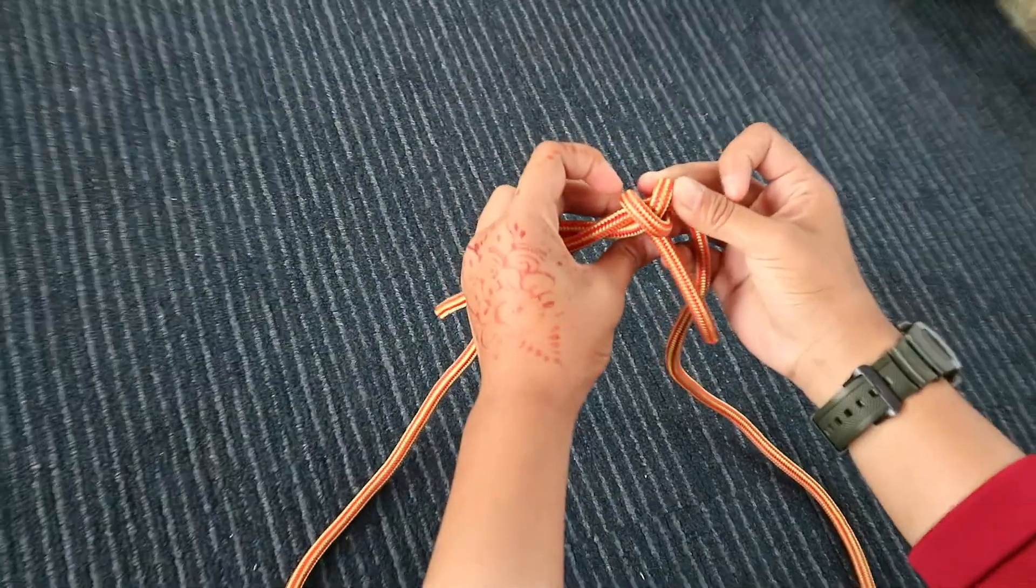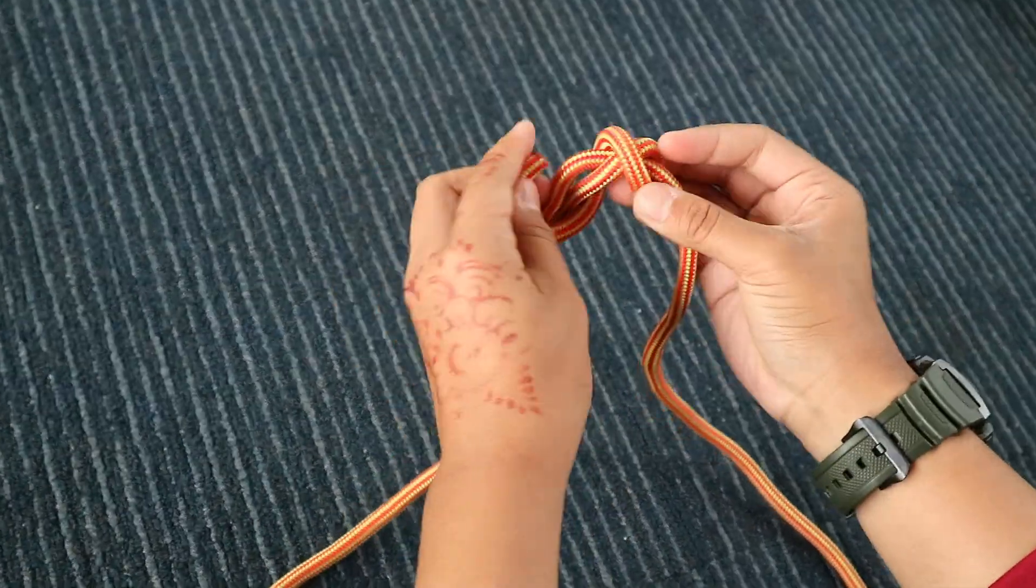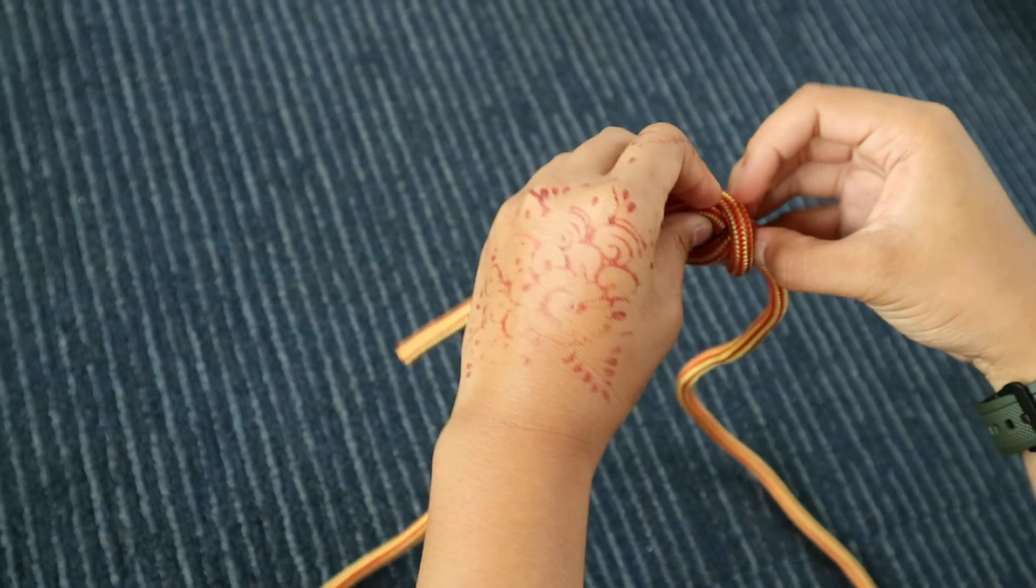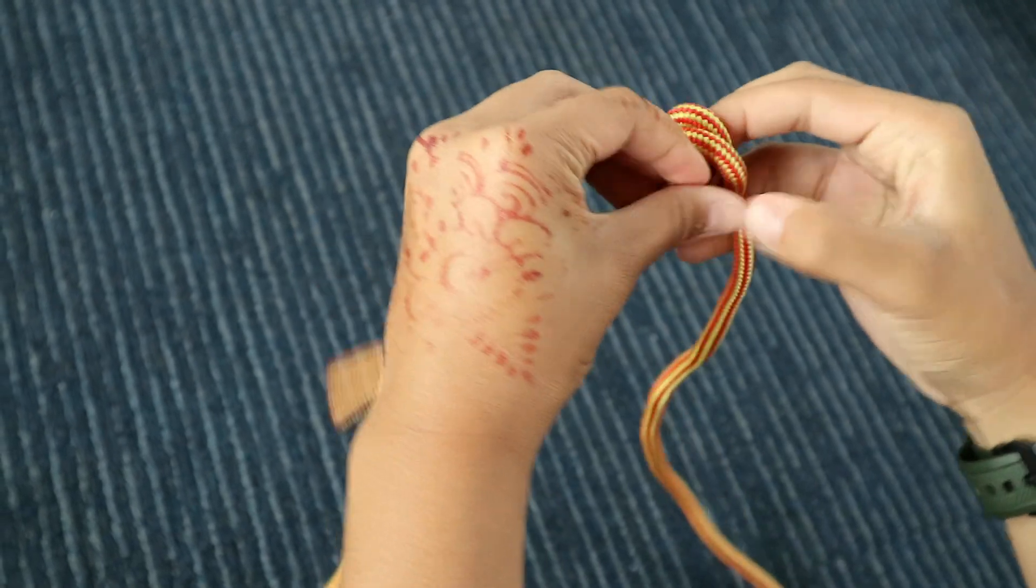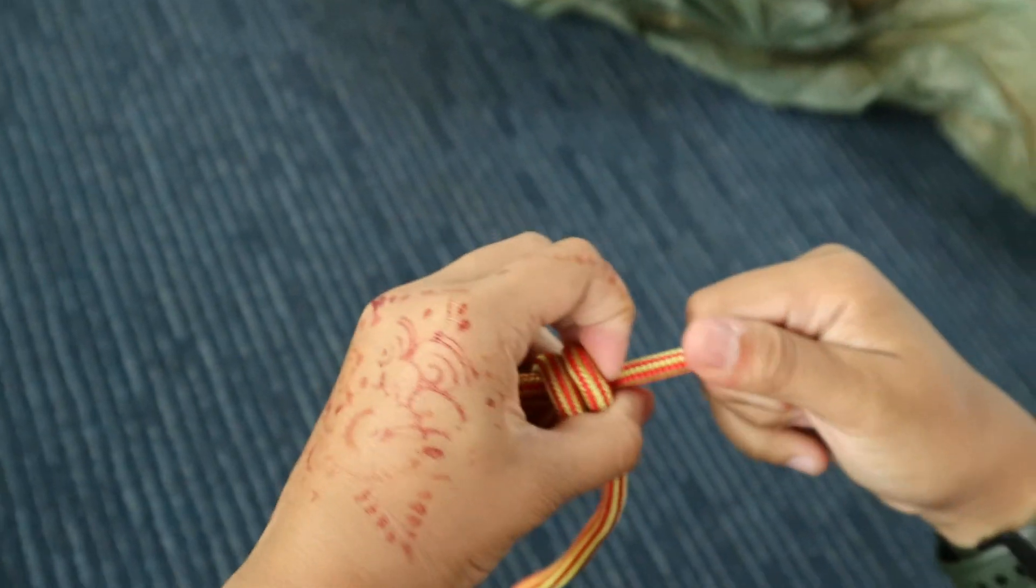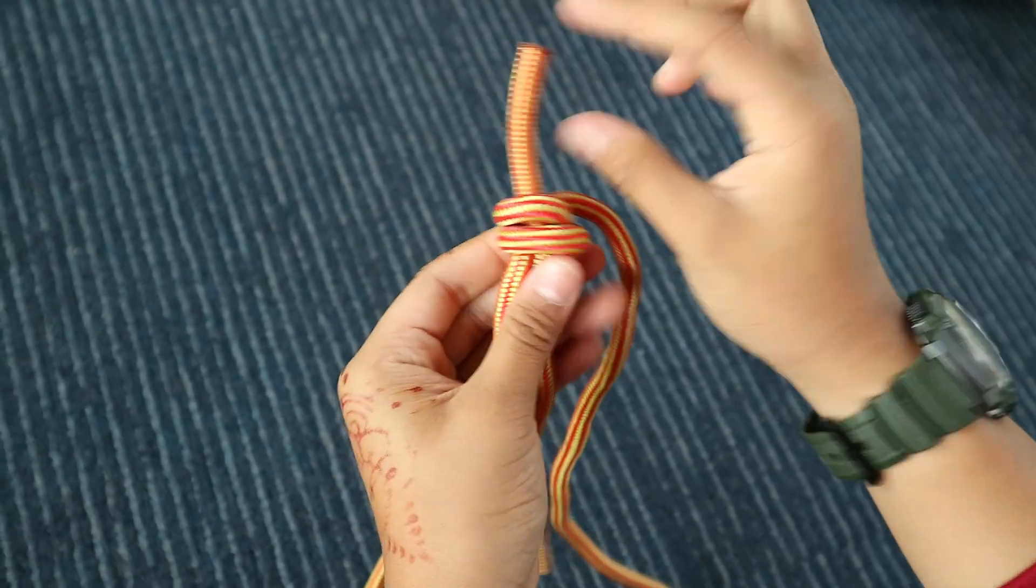And then you go downwards and put this through the X, this way. And make sure you have an excess rope here.